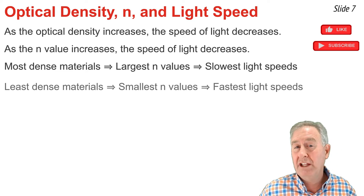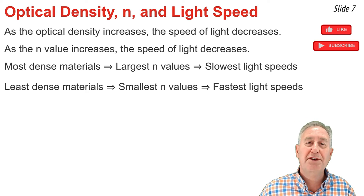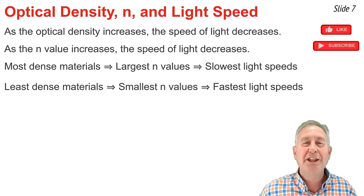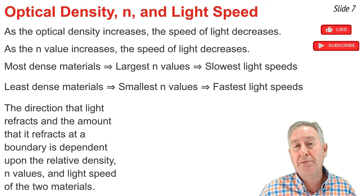And materials that are least optically dense have the smallest index of refraction values, and light travels fastest through those materials.